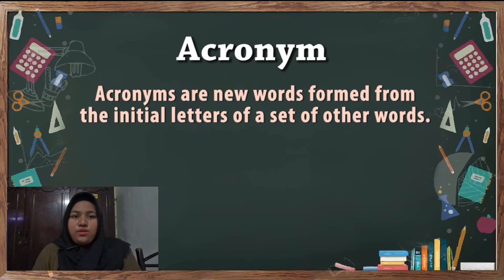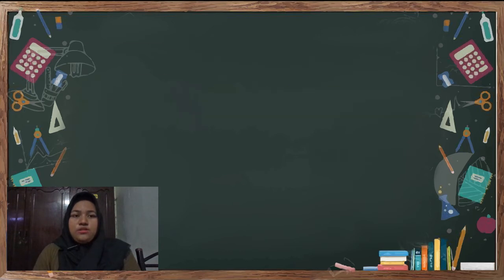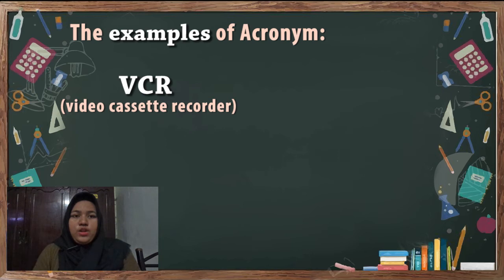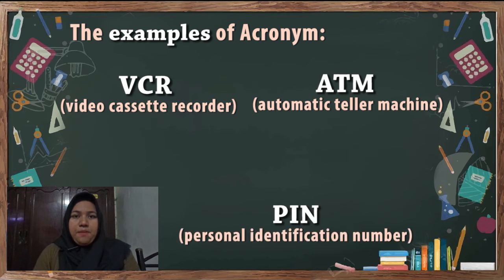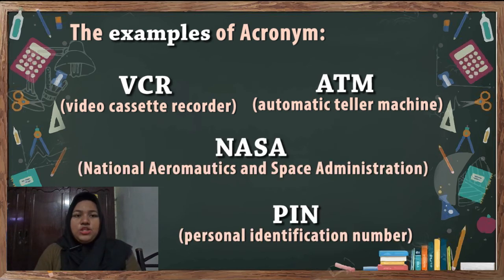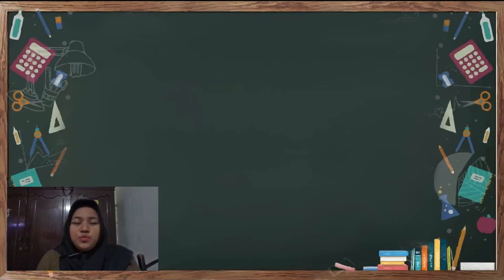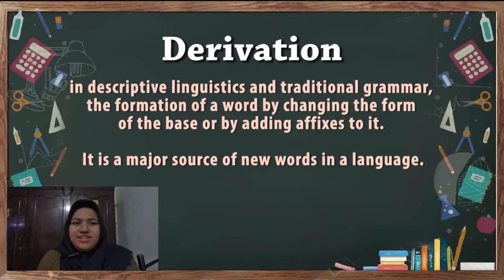Eight, acronym. Acronyms are new words formed from the initial letters of a set of other words. For example, VCR — video cassette recorder; ATM — automatic teller machine; PIN — personal identification number; NASA — National Aeronautics and Space Administration.